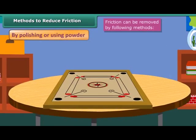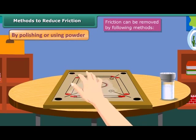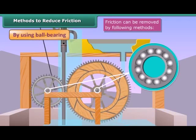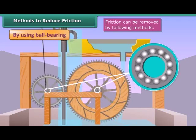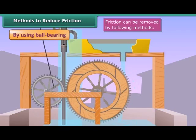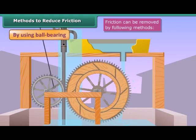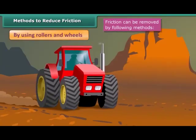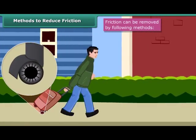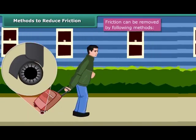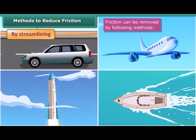Friction can be reduced by the following methods. By polishing or using powder: we can smooth rough surfaces by polishing or by using powder, reducing friction from the surfaces. By using ball bearings: ball bearings are a hollow circular device containing small metal balls, fitted around the moving part of a machine like an axle. Ball bearings reduce friction by converting sliding friction into rolling friction. By using rollers and wheels: many heavy objects like big suitcases are provided with small wheels called rollers to reduce friction so they can be carried easily by pulling.